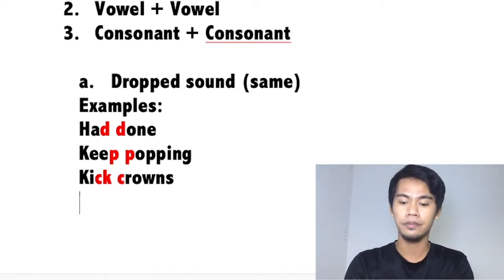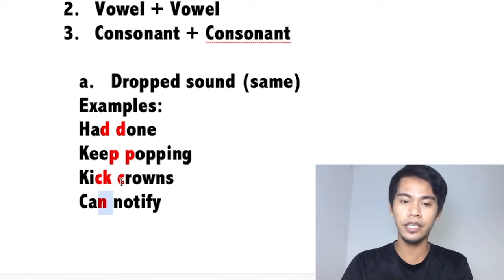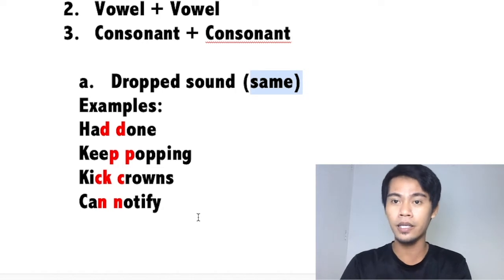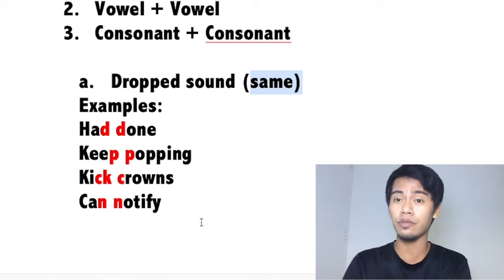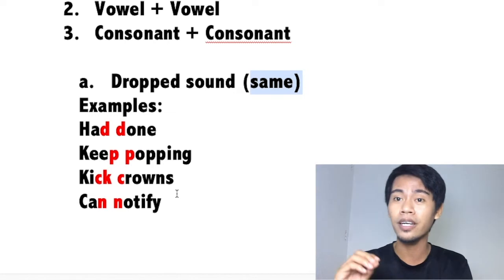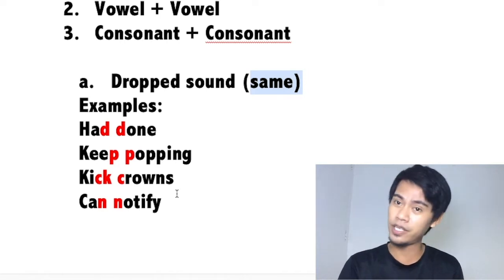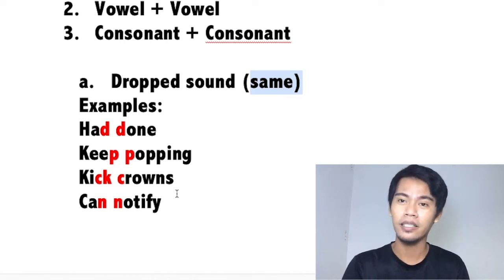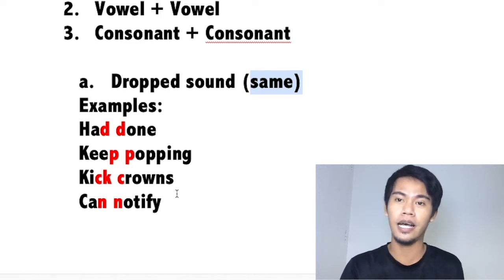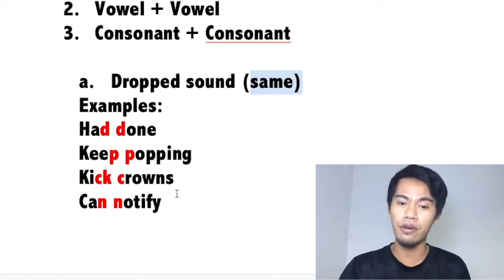Last example for dropped sounds: 'can notify.' The last sound of 'can' is the N sound — consonant. The first sound of 'notify' is also the N sound. They have the same sound, so just drop that N and say 'can notify.' Tip: variations with 'can' pronunciation — you can say 'can' (stressed) or the reduced 'kn' sound. If you want to stress it, say 'I CAN do it.' If not stressed, say 'I c'n do it.' See the difference — 'I can do it' versus 'I c'n do it.'